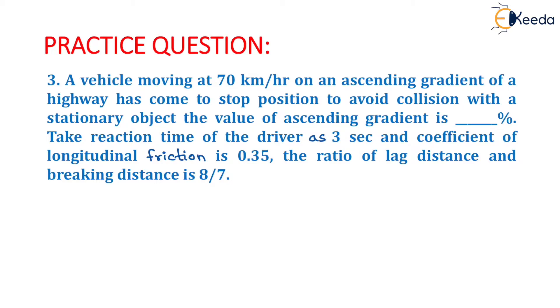Question is given as: a vehicle moving at 70 km per hour on an ascending gradient of a highway has come to stop position to avoid collision with a stationary object. The value of ascending gradient is dash percent.